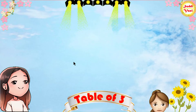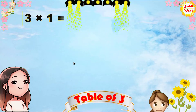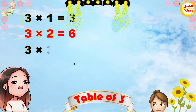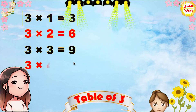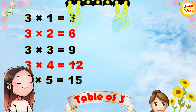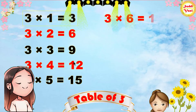Once again: 3 1s are 3, 3 2s are 6, 3 3s are 9, 3 4s are 12, 3 5s are 15, 3 6s are 18.